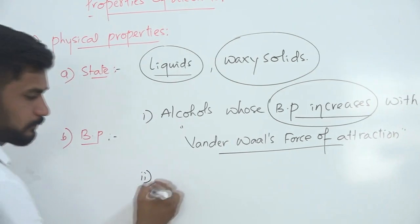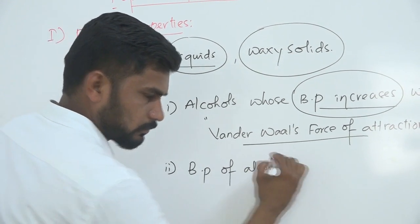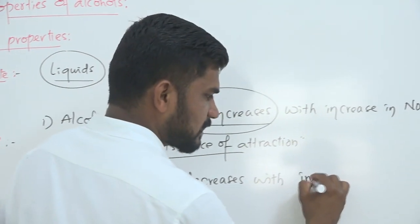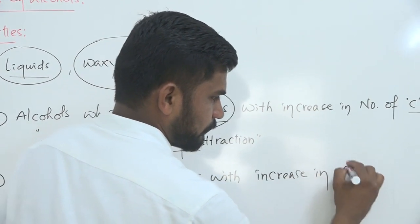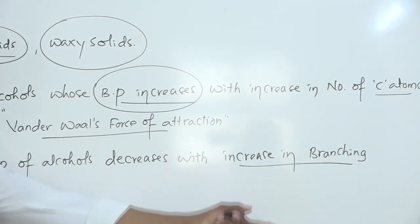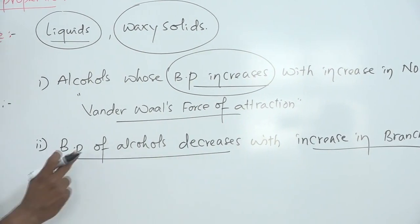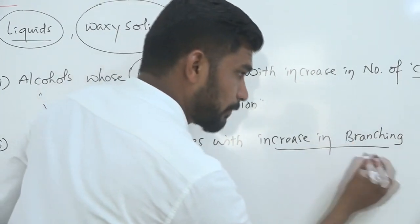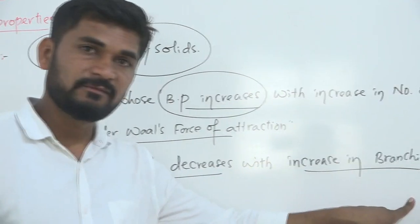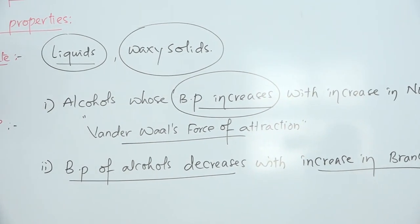The second point is that the boiling point of alcohols decreases with increase in branching. As branching increases, the surface area decreases, and this decrease in surface area due to branching causes a decrease in the boiling point of alcohols.